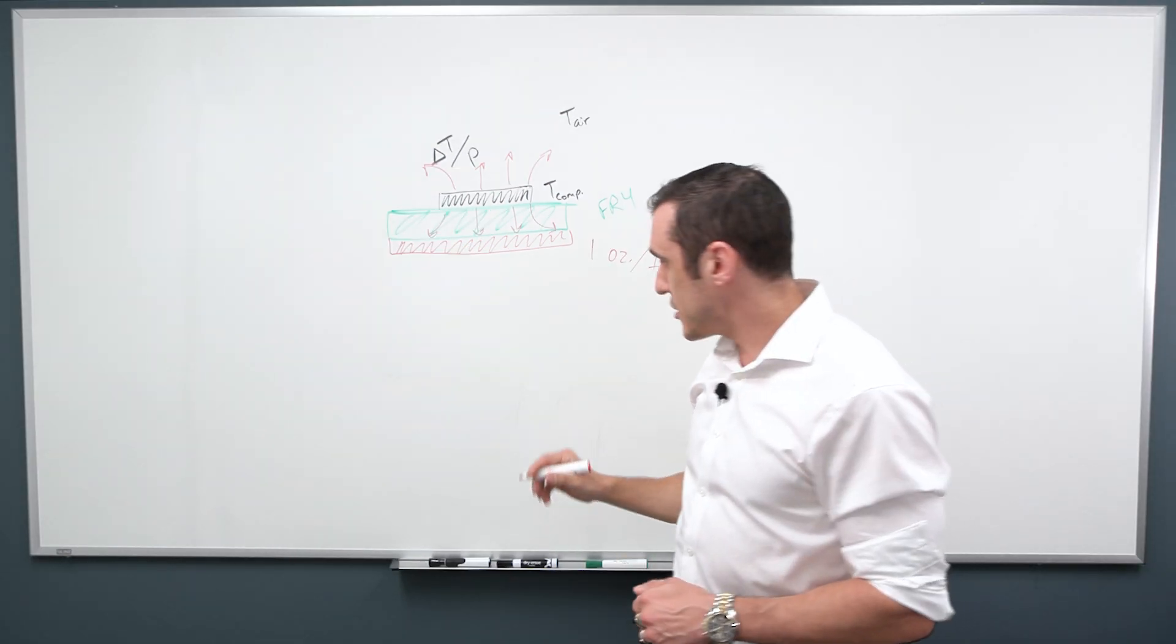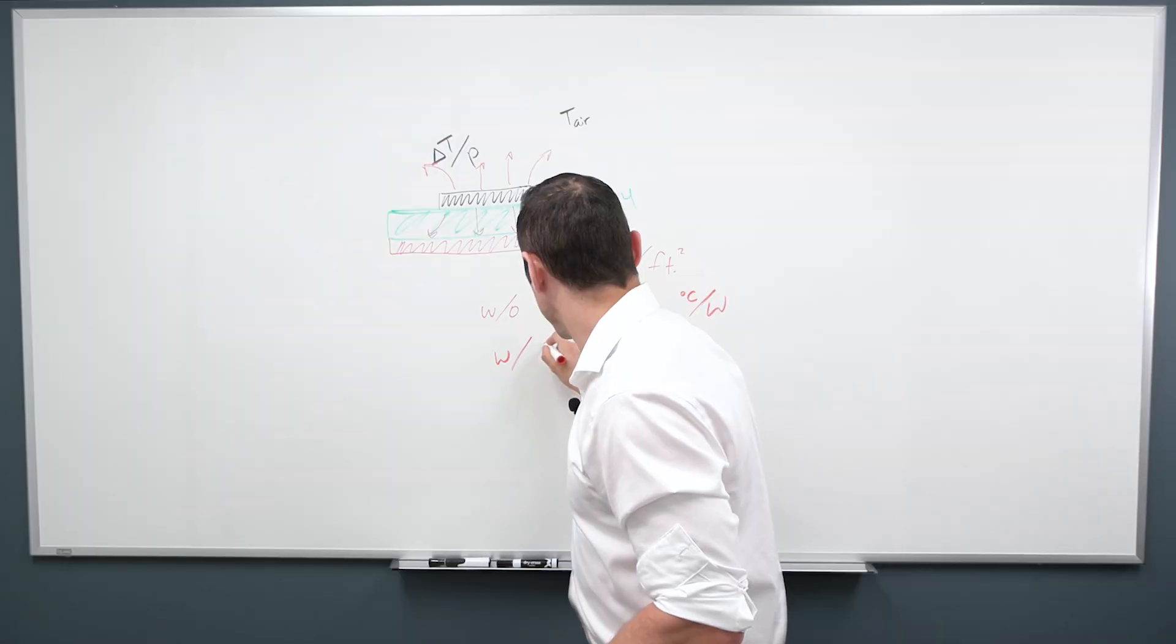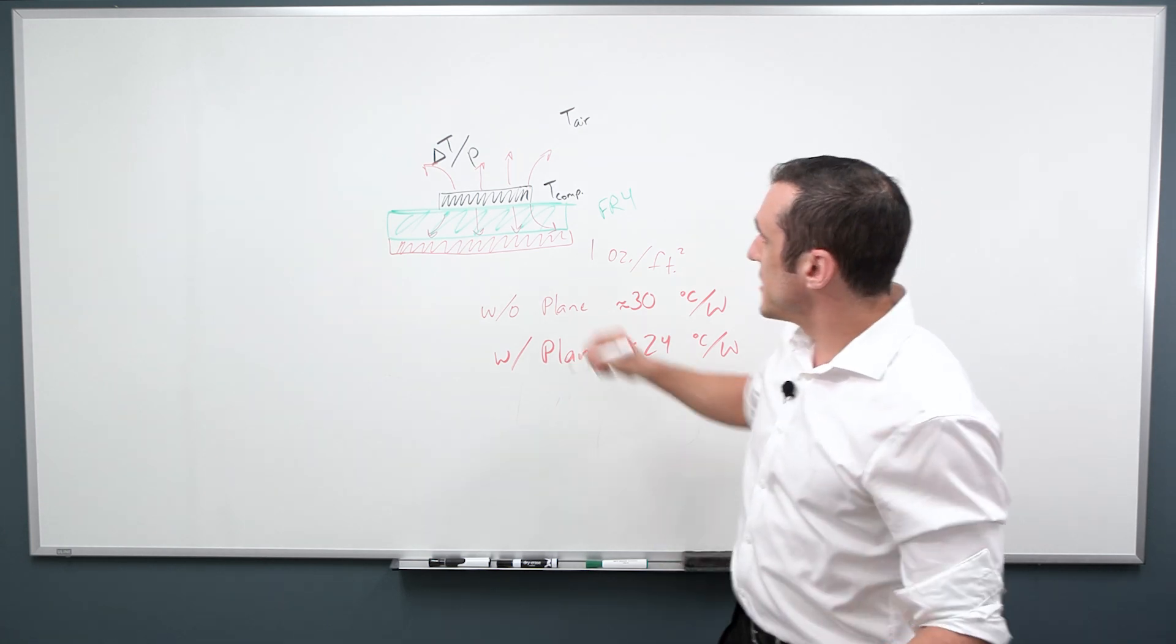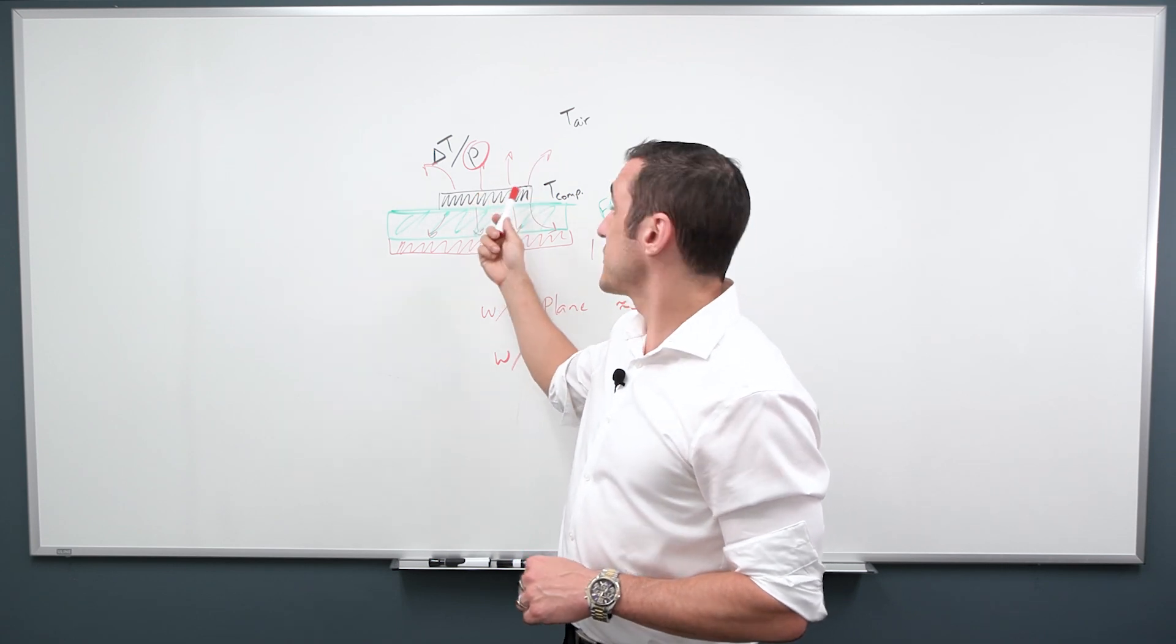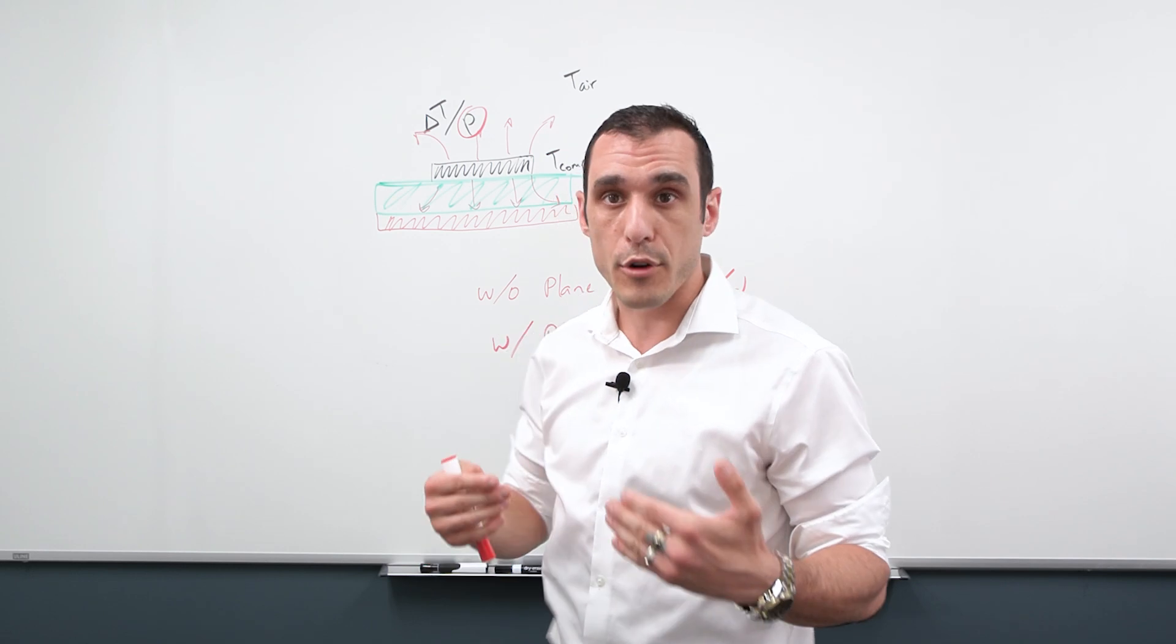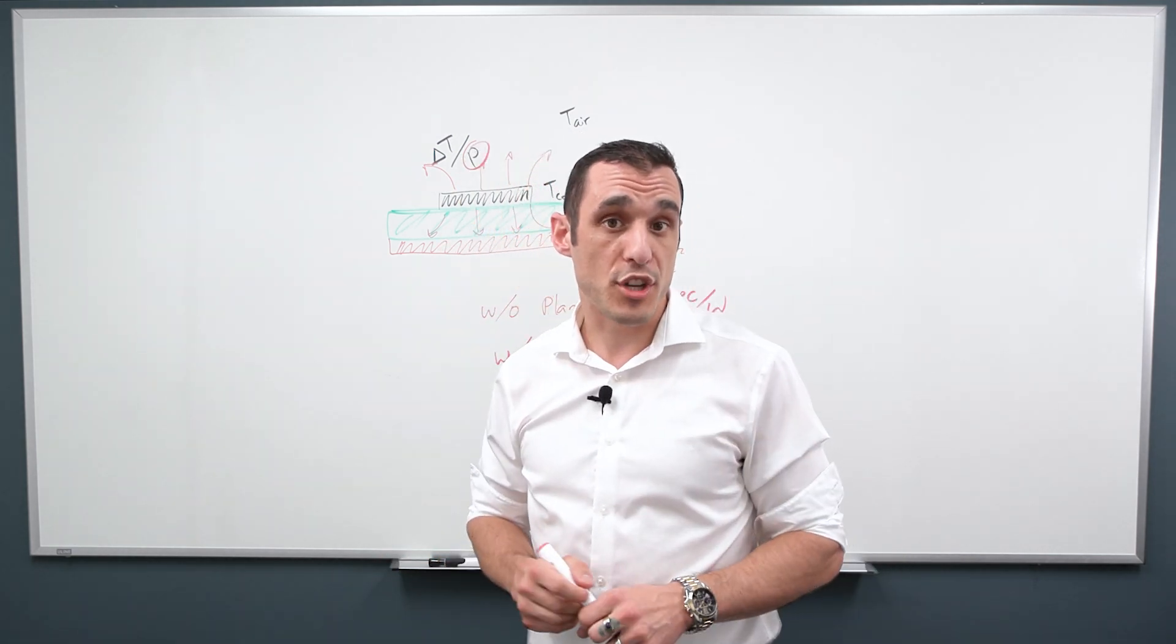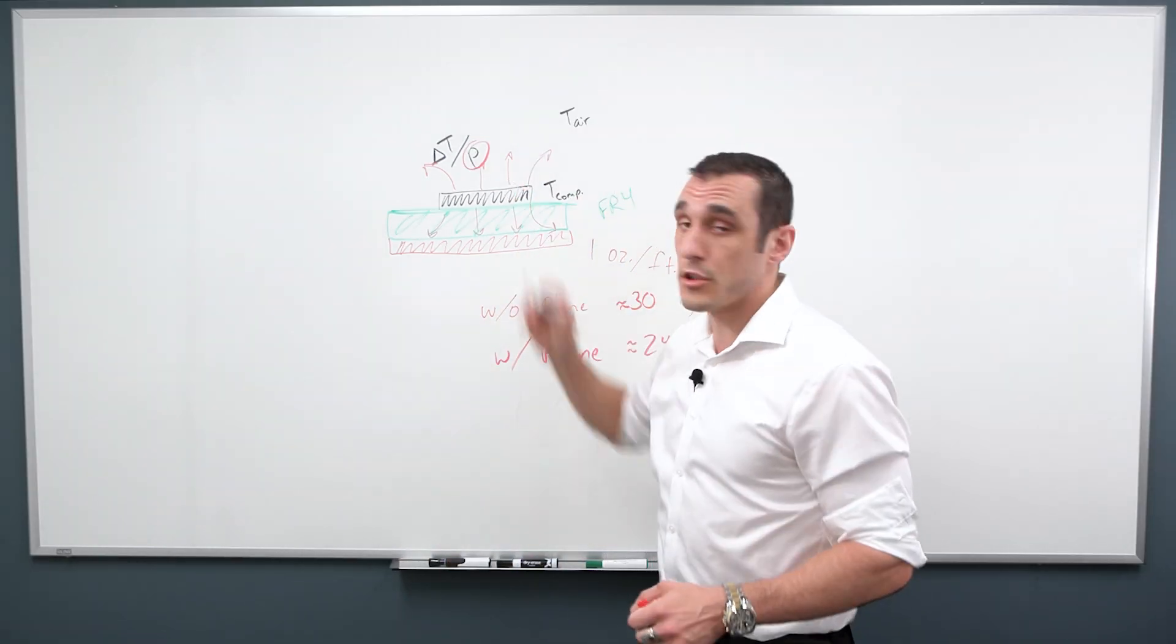So some typical values that you might see in the data sheet, let's say without a plane, so package to air might be about 30 degrees Celsius per watt. With a plane or with copper nearby, you might have something smaller, maybe 24 or so degrees C per watt. These values, what they're assuming in this power value is that this is all resistive power drop, not reactive power drop. So they're only counting the power consumption in a component that is dissipated as heat. That reactive power doesn't actually contribute to any resistive heat or any resistive losses. You could only count the portion of the total power consumed by a component that is accumulated as resistive losses.